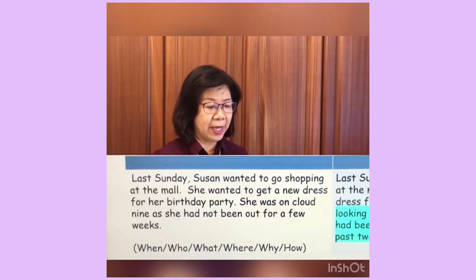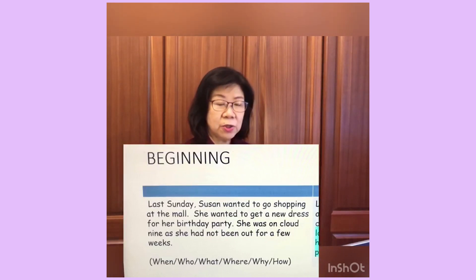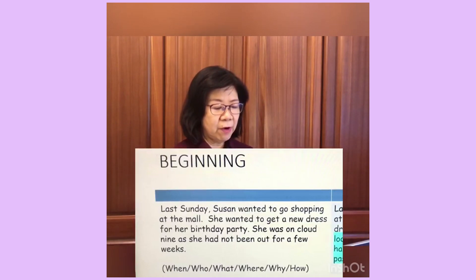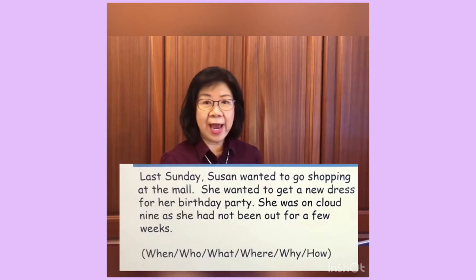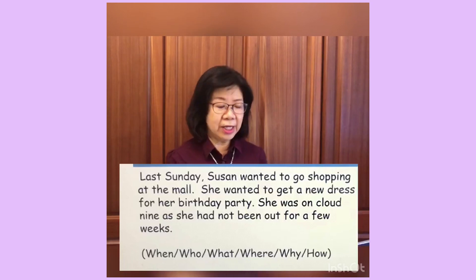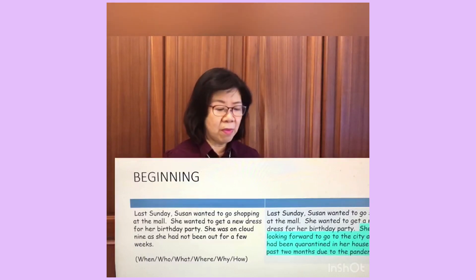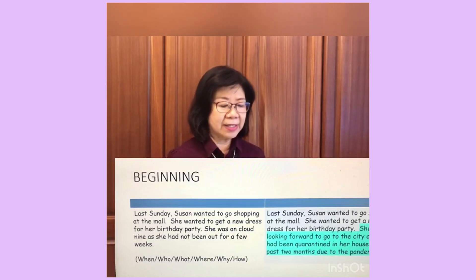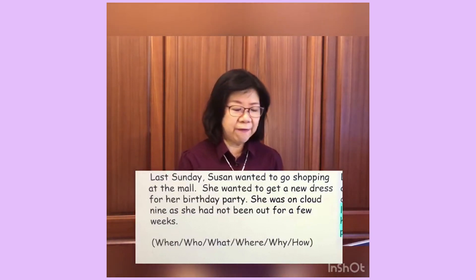Let's do the beginning. The original one: 'Last Sunday, Susan wanted to go shopping at the mall. She wanted to get a new dress for her birthday party. She was on cloud nine as she had not been out for a few weeks.' I've used the WH questions to write this. When? Last Sunday. Who? Susan. What did she want to do? She wanted to go shopping. Where? At the mall. Then why? She wanted to get a new dress for her birthday party. And how does she feel? She was on cloud nine.